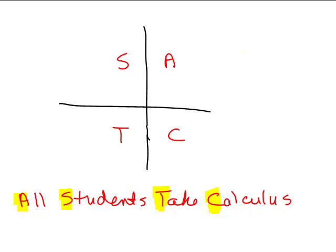If that mnemonic is helpful, you can think of it as: All students take calculus — all functions positive in quadrant 1, S for only sine and cosecant, T for only tangent and cotangent, C for only cosine and secant. I personally just think about the signs of X and Y — so I know the cosine is negative and the sine is positive in quadrant 2, for example. It's up to you which approach works best.